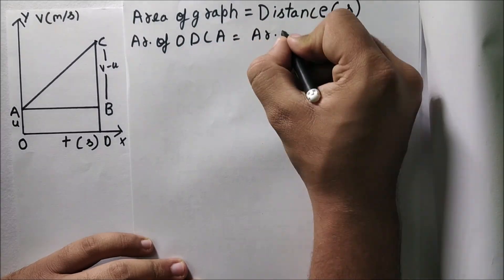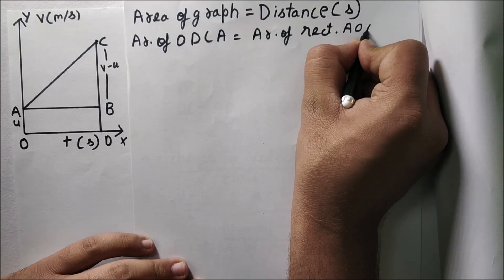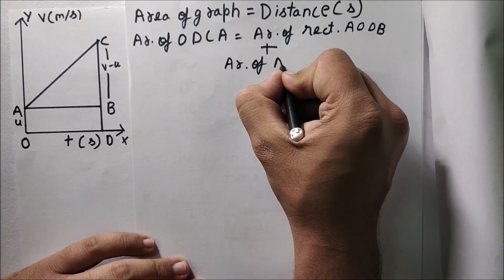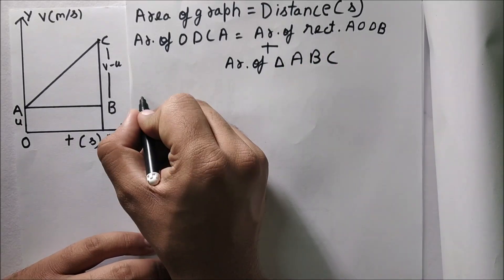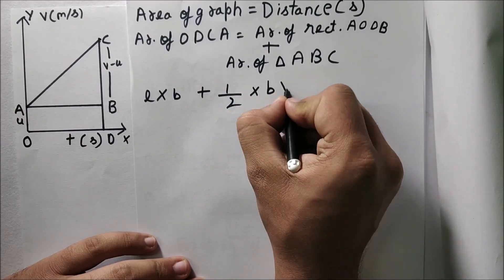So we need to find the area of quadrilateral ODCA, which is nothing but the sum of area of rectangle AODB plus area of triangle ABC. As you know, area of rectangle is length into breadth and area of triangle is half into base into height.